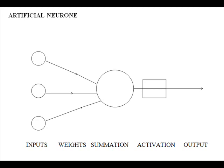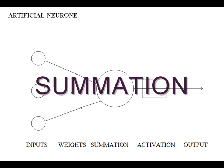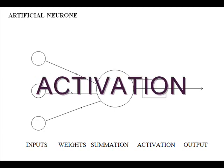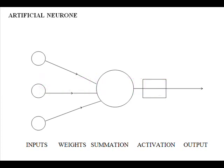Then there is a summation process, and then the information is only passed on to the next artificial neuron if a certain threshold is reached.